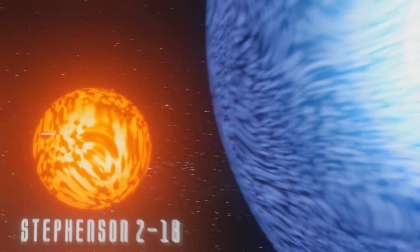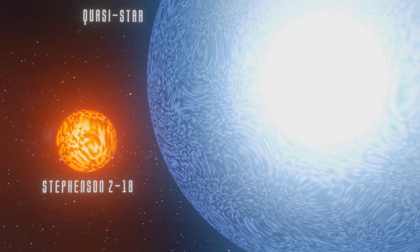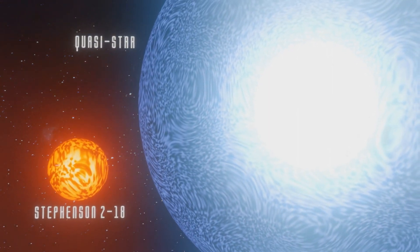In the early universe, there may have been stars which were larger than even this, called Quasi-Stars, which would span the entire solar system, and would have given rise to today's supermassive black holes.